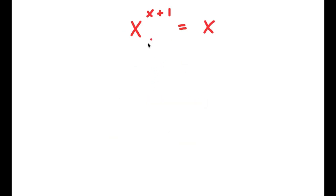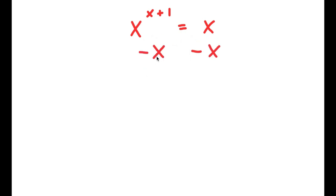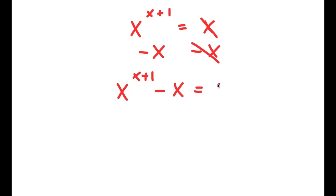So in this problem, I have x to the power of x plus 1 is equal to x. To solve this, I'm going to start by subtracting x on both sides. These two cancel out and I'm left with x to the power of x plus 1 minus x is equal to 0.